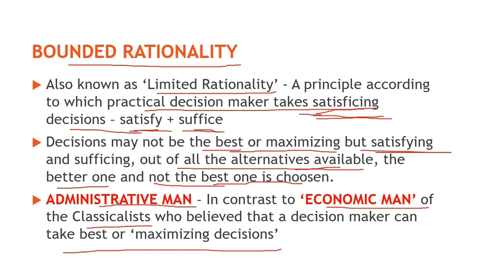Herbert Simon ne administrative man ka concept diya tha, jo ki classical theorists dwara diye gaye economic man ke concept se bilkul alag tha. According to the economic man concept, a decision maker takes the best or maximizing decision. Lekin Simon ka concept kehta tha ki ek decision maker kabhi bhi best decision le hi nahi sakta — woh jo decision leta hai woh baaki available options se ek better option hota hai, ek satisficing option hota hai. Isliye Simon ke concept ko administrative man kaha jata hai.